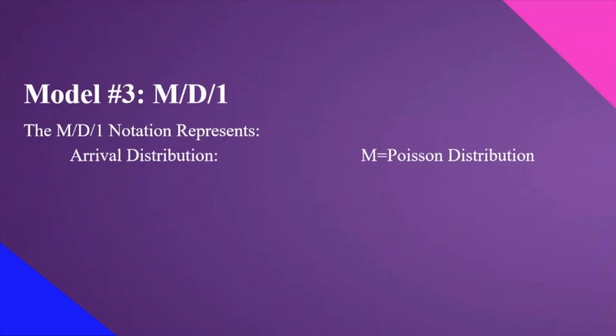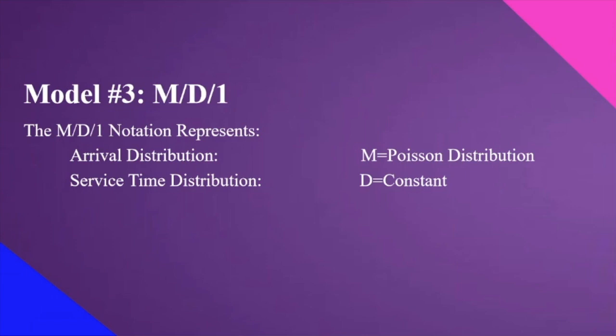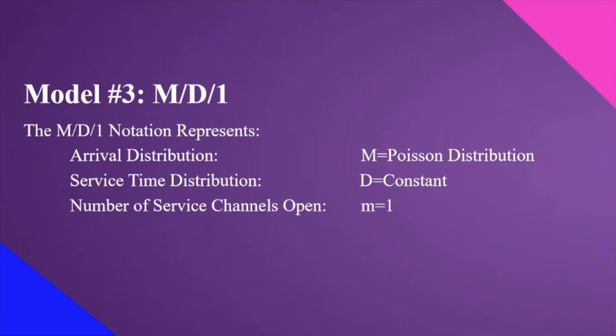The MD1 notation represents the arrival distribution — this is just the same with the first and the second model — that is Poisson distribution. While for the service time distribution, it will now be constant. So D stands here as constant, meaning the service time given by the server to each client is the same. And for the number of service channels open, we have one — so one server.